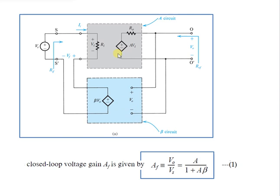The A circuit has an input resistance denoted as Ri, an open circuit voltage gain denoted as A, and an output resistance denoted as R0. It is assumed that the source Vs and the load resistance have been absorbed inside the A circuit. The B circuit does not load the A circuit — that is, connecting the B circuit does not change the value of the A circuit.